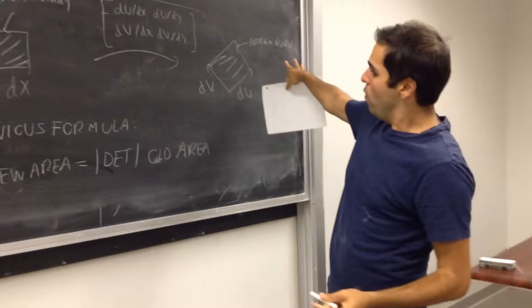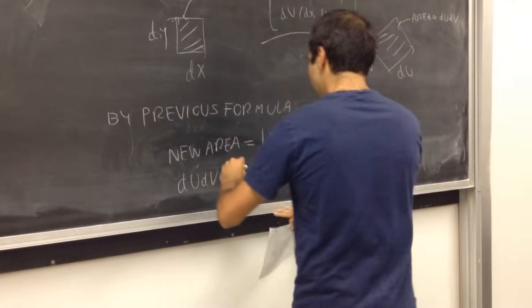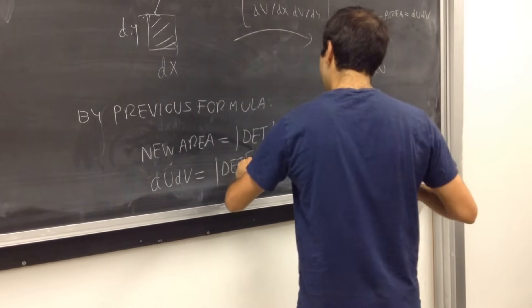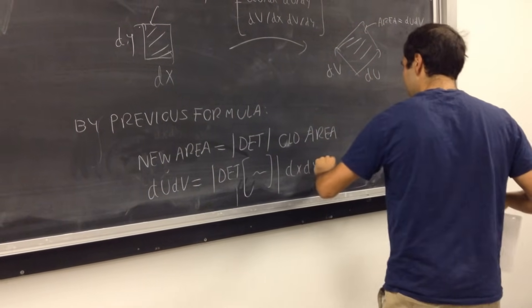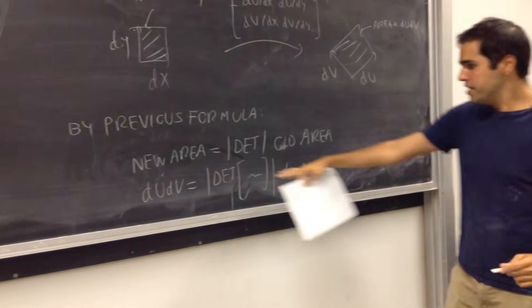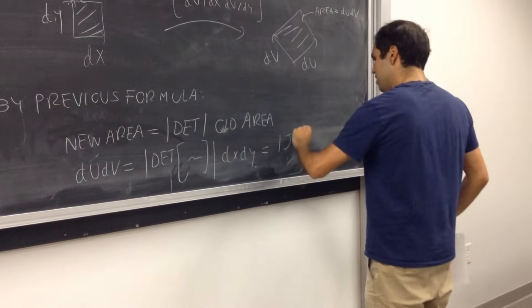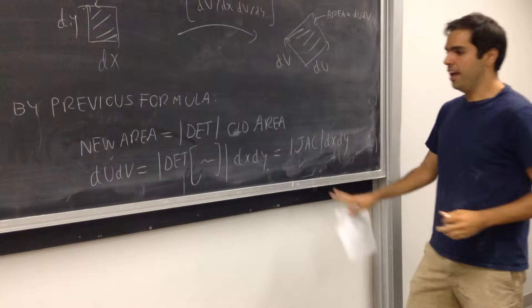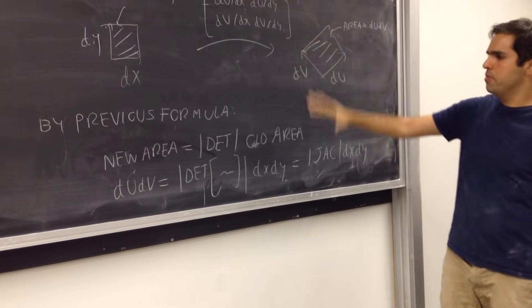So, what do we have, just plugging this in, we have du, dv, equals to absolute value of the determinant of this matrix here, times dx dy, but this thing here, it's precisely called the Jacobian. So, absolute value of the Jacobian, dx dy, and this is why precisely,